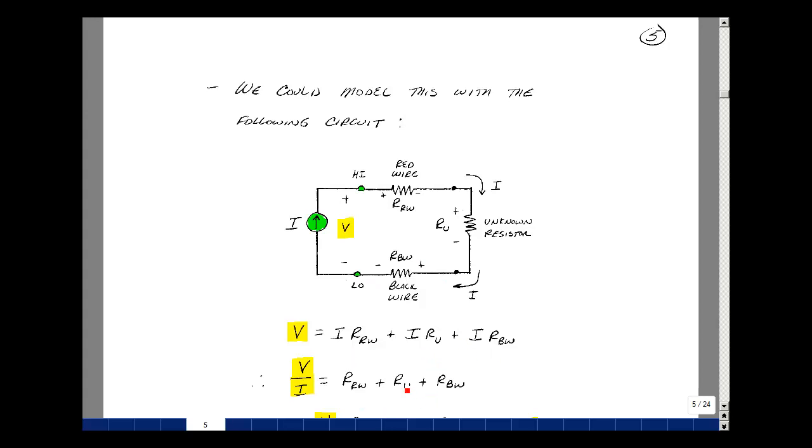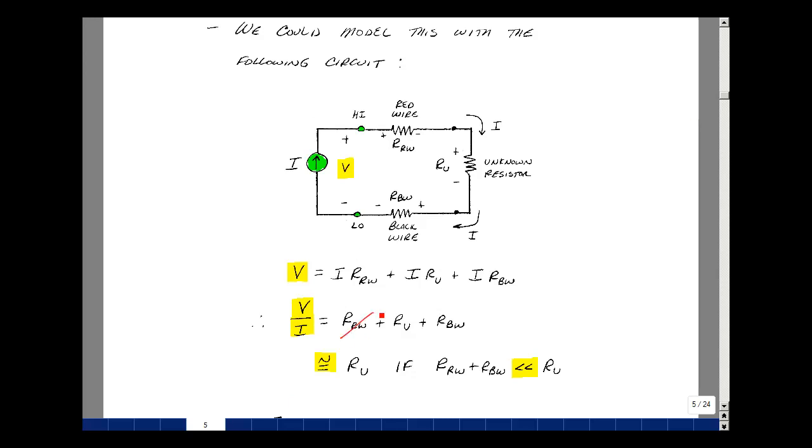Well, there's a common I here, so you can pull it out and divide through. So the ratio of the voltage to the current would be the sum of these three resistances. Now we're measuring resistors in lab in general that are in the thousands of ohm range, and these wires have resistances in the order of 50 milliohms. So the sum of these three could be approximated as just the value of the unknown resistance.